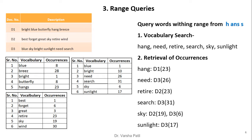Range queries find keywords within a particular alphabetical range. For example, a range query from 'h' to 's' finds all words alphabetically between h and s, such as hang, need, retire, search, sky, and sunlight. From the vocabulary, we find that hang is present in d1 at location 23, need is present in d3 at location 26, and so on. Based on these occurrences, all three documents d1, d2, and d3 are returned for this range query.